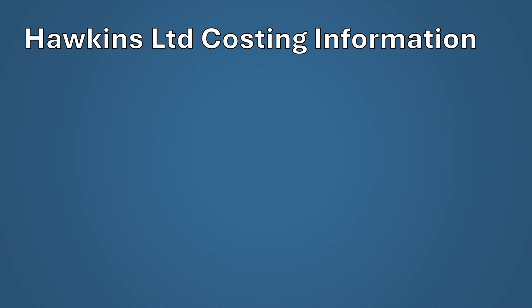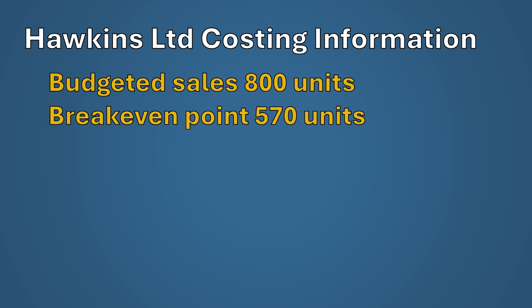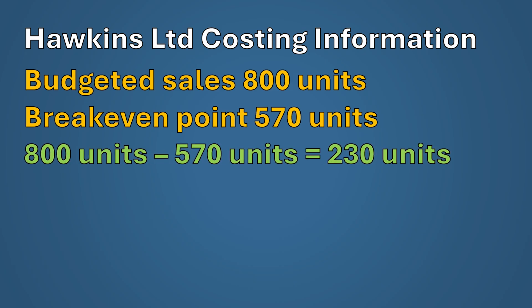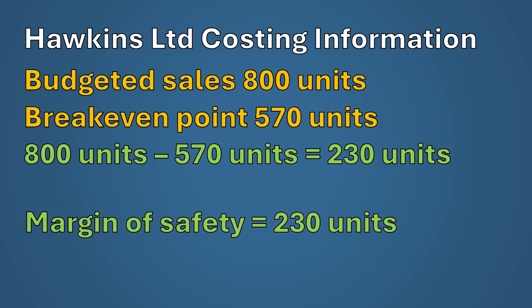Bringing back the Hawkins Limited case study: they budgeted to produce and sell 800 units, and we already calculated the breakeven point at 570 units. To calculate the margin of safety in units, simply find the difference between planned sales in units and the breakeven in units. That would be 800 minus 570, which equals 230 units. This means the business could lose up to 230 unit sales before the project becomes unprofitable.